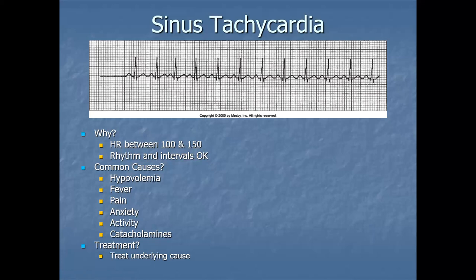Sinus tachycardia is somewhat benign, but the significance of the 150 threshold is this: for adults, when the heart rate increases above 150 to 160-165, cardiac output actually starts dropping. The heart is beating faster, consuming about 25% of the body's oxygen uptake, but when the rate exceeds 150-170, cardiac output drops. Oxygen uptake is increasing but delivery to tissues is decreasing — a bad combination. So sinus tachycardia is relatively benign, but other forms of tachycardia we'll discuss can be very problematic.